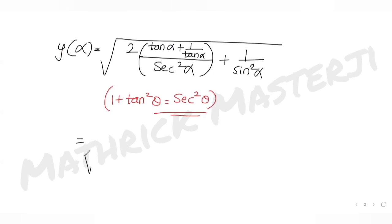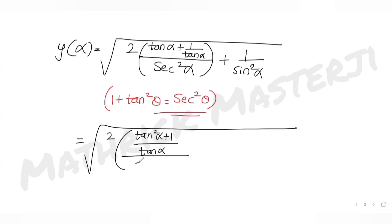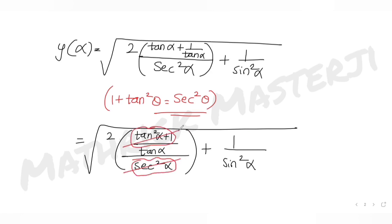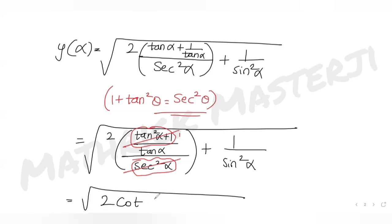Further simplifying: cross-multiplying gives (tan²α + 1)/tan α divided by sec²α, plus 1/sin²α. Since tan²α + 1 = sec²α, the sec²α in the numerator and denominator cancel, leaving √2 · (1/tan α) = √2 · cot α, plus 1/sin²α.